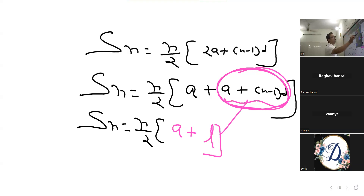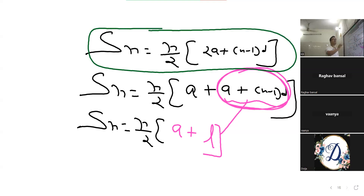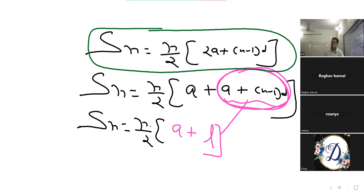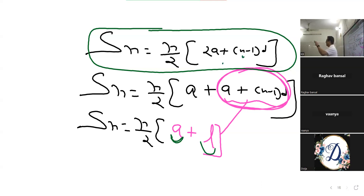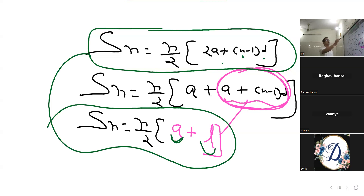AP के sum के दो formula हो गए। Formula 1: N by 2 into 2A plus N minus 1 into D. Modified formula: N by 2 into A plus L. If you have the number of terms, first term, and last term, use the second formula. If you have first term and common difference, use the first formula. These two formulas will be used in the tenth and eleventh grade.